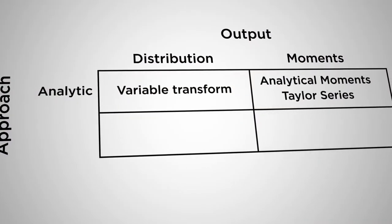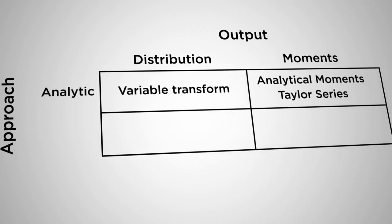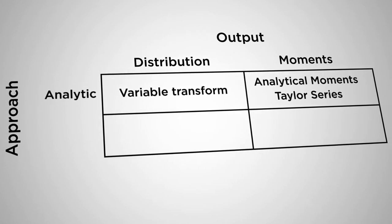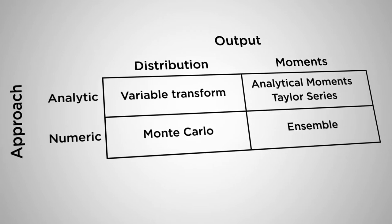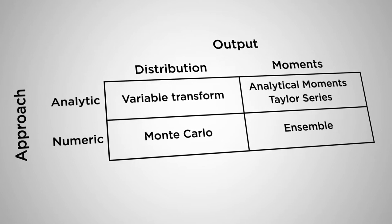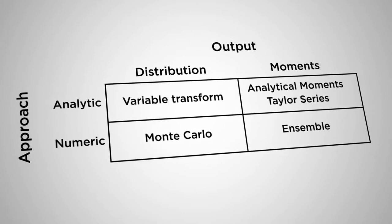In looking at these approaches, we're going to focus on two key sets of trade-offs. The first trade-off is between methods that provide an analytical solution — a mathematical equation that describes in closed form how we propagate uncertainties into the future — versus numerical methods, those that rely on computer simulation to approximate the way that we propagate uncertainty into the future. We'll also consider another axis that distinguishes between methods that give us the full probability distribution of our forecast versus methods that approximate that in terms of just key statistical moments, such as the mean and standard deviation of the forecast.